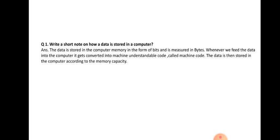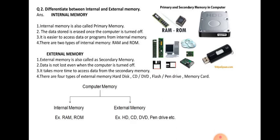The next question is: differentiate between internal and external memory. Internal memory is also called primary memory. The data stored is erased once the computer is turned off. It is easier to access data or programs from internal memory. There are two types of internal memory: RAM and ROM.